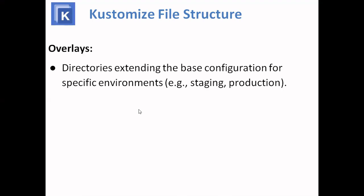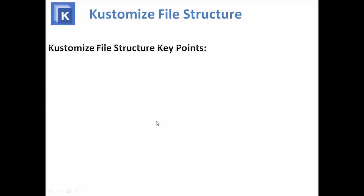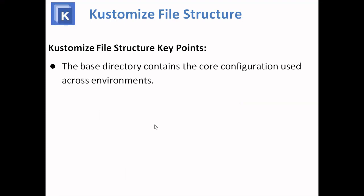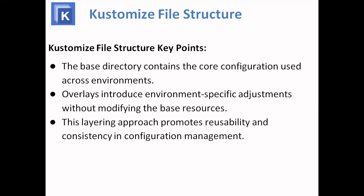In the overlays directory, it extends the base configuration for specific environments. In the base there is a default configuration, and if you want to go for specific environments, the directory extends to overlays. Each overlay also has a customization.yaml file. These files reference the base directory using 'bases' for shared resources and also specify additional resources or patches specific to the environment. The base directory always has the core configuration, and the overlays introduce environment-specific adjustments without modifying the base resources. This layering approach promotes reusability and consistency in configuration management.